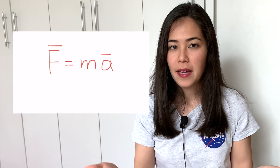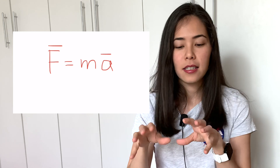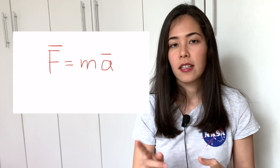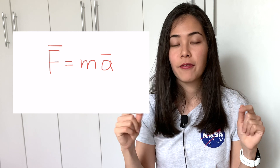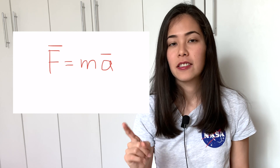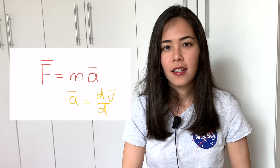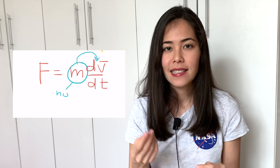Now if we want to be more specific and describe this with equations, we turn to Newton's second law: F equals ma. The net force acting on an object is equal to the mass of the object times acceleration, and note that force and acceleration are in vector form — the direction of the force affects the direction of acceleration. We can then express acceleration as a change of velocity over time, which is its definition.